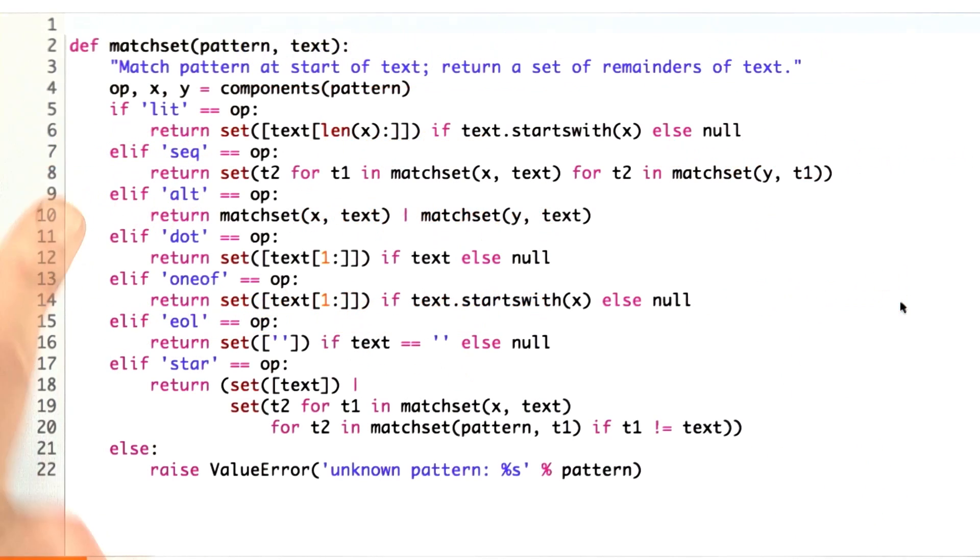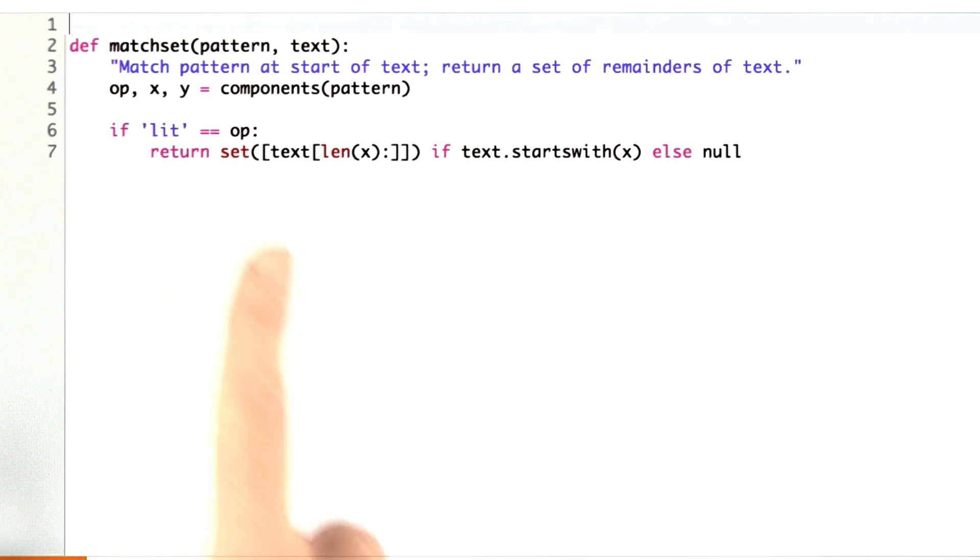Let's see how that works. Here's the definition of the interpreter. Let's focus just on this line here. This says if the op is a literal, then we return this result.